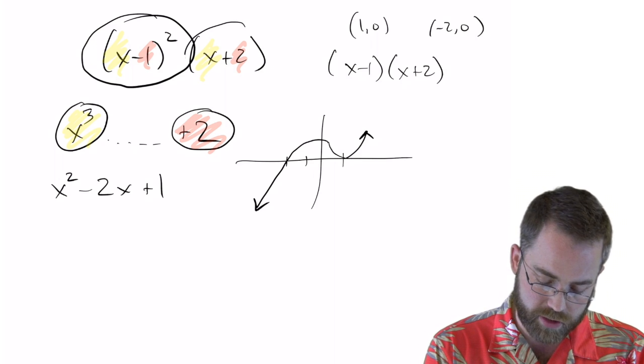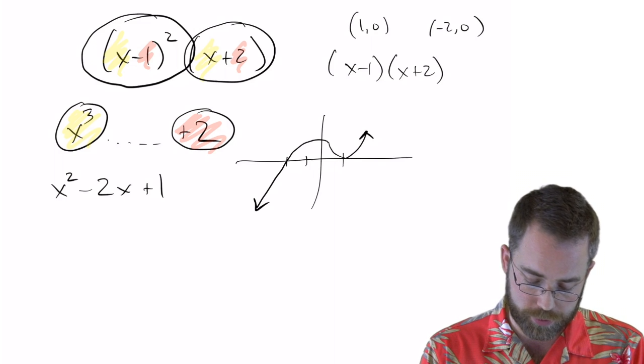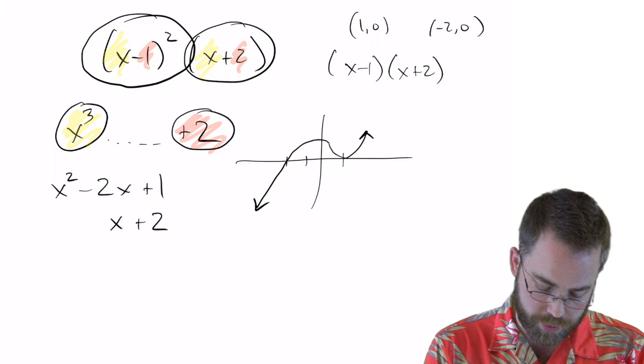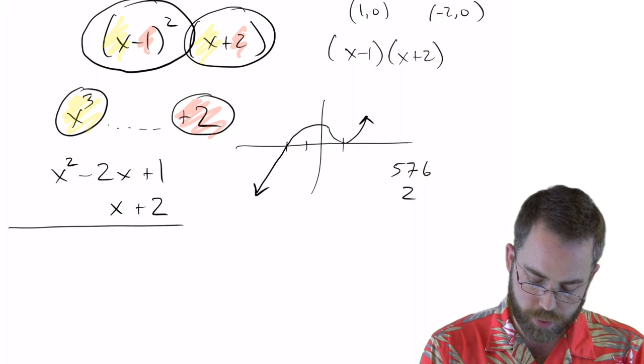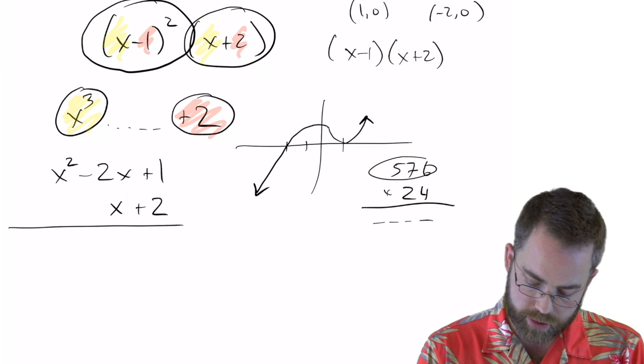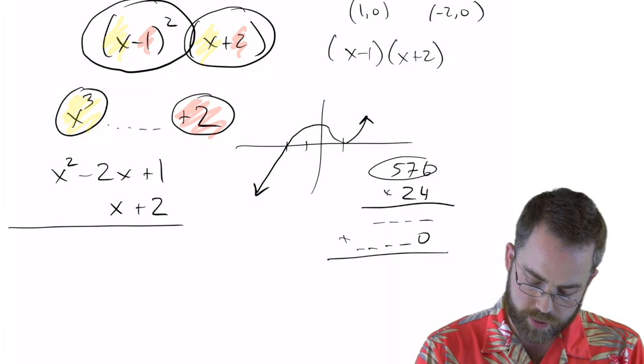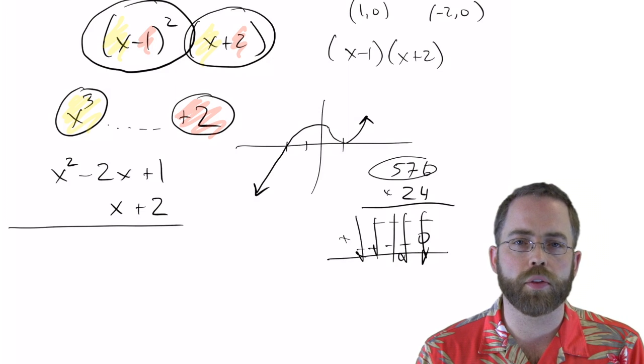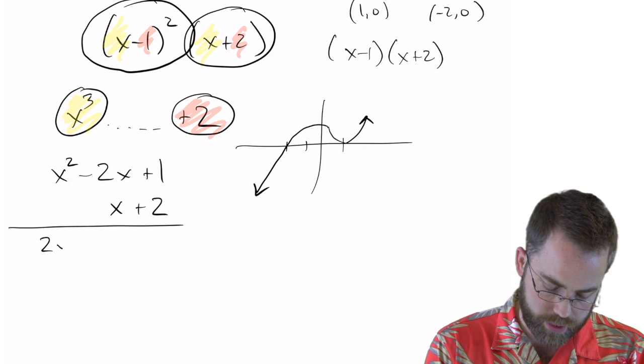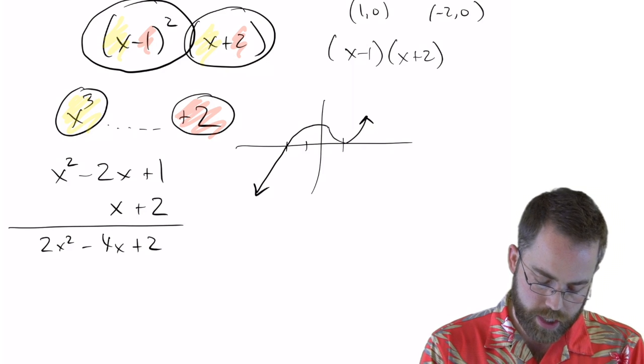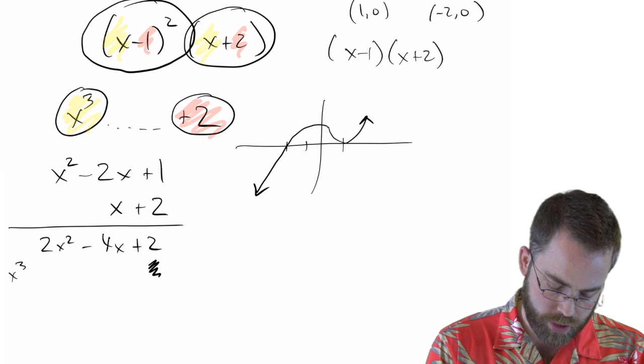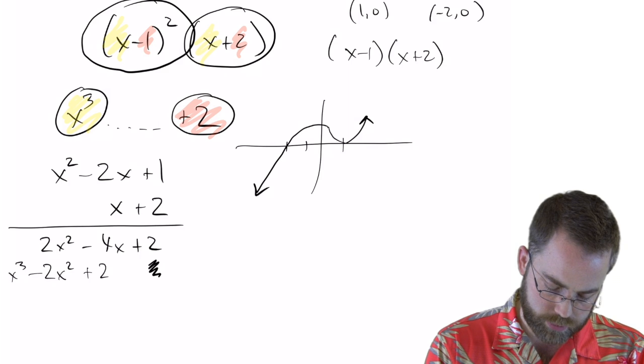And then this other term over here, I don't have anything super special to say about that. It's just a binomial. So I'm setting these up in the same way that I set up regular multiplication, that if I had to multiply 576 by 24, I would multiply in this fashion. I would do 4 times each of these, leave a 0, and then do 2 times each of those, and then I would add the 1s, the 10s, the 100s on down the line. Same exact thing goes for polynomial multiplication. I'm just going to multiply 2 times everybody and get 2x squared minus 4x plus 2. And then I'm going to leave a little gap right there, and I'm going to multiply x by everybody. And so that's going to be x cubed minus 2x squared plus 2x.